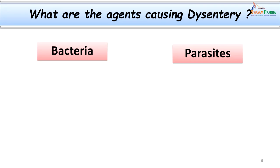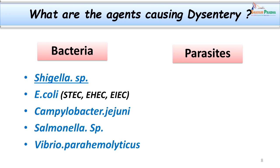Different bacteria as well as parasites can cause dysentery — referred to as bacillary dysentery and parasitic dysentery respectively. It is also important to differentiate whether the condition is caused by bacteria or parasites, and to know which group of bacteria can lead to this condition. The important ones are Shigella species and Escherichia coli — both members of the Enterobacteriaceae family, and both producing a similar toxin called Shiga toxin.